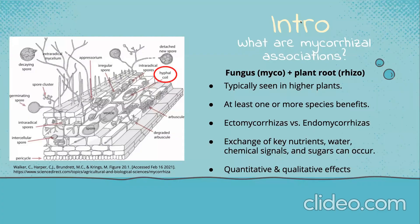So what are mycorrhizal associations? A mycorrhizal association is a partnership between a fungus and a plant root, typically occurring in higher plants. Most times both organisms involved can benefit from the interaction, with at least one or more species benefiting at a certain time. The association we'll be discussing today is mutually beneficial between the fungal and plant species involved.